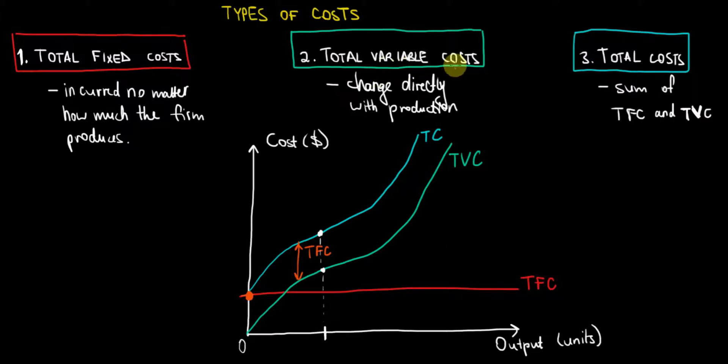Now the total variable cost, which is usually the labor cost, will change directly with production. Meaning the more output we want, the more production we want, the more labor we have to hire. So therefore the total variable cost over here we can see it rises and as you can notice it is not a straight line and I will explain why it is not a straight line.